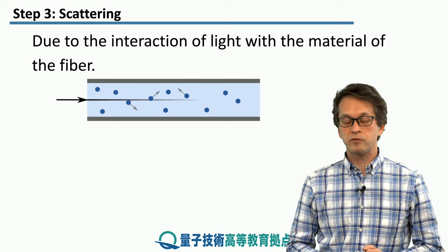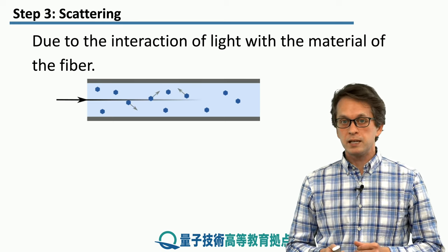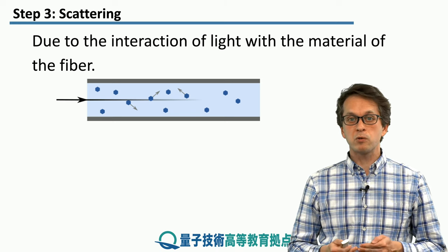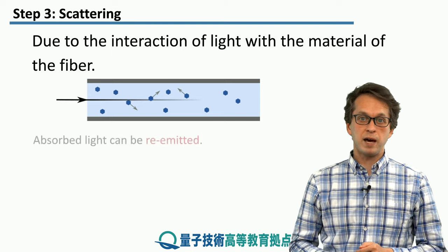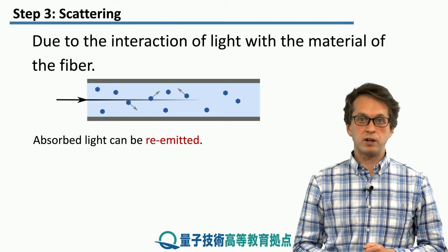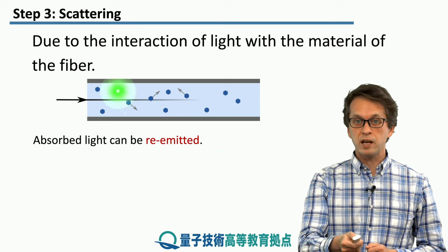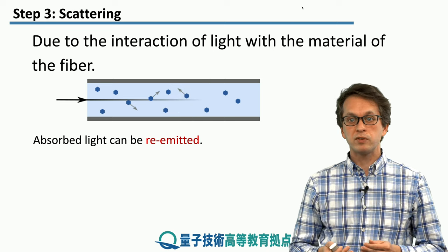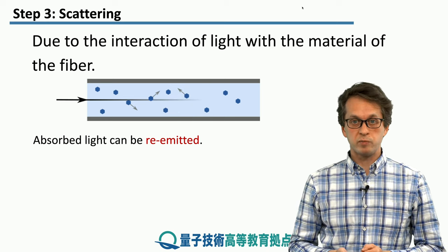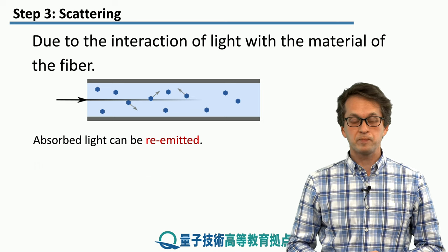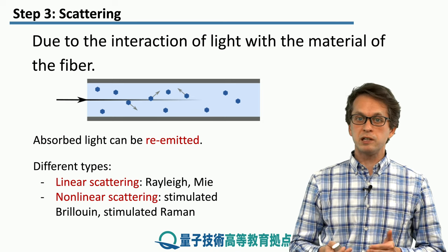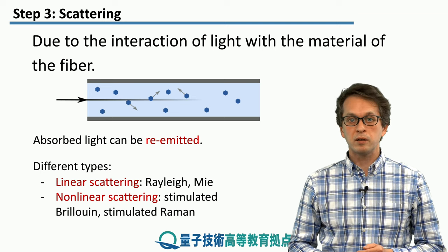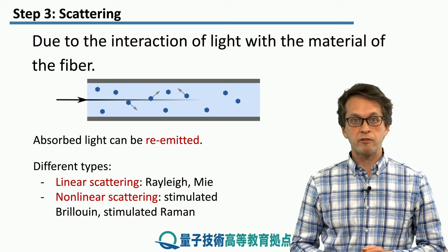The other source of attenuation is scattering. This is similar to absorption, but the light is not only absorbed — it is also re-radiated and re-emitted back into the fiber at random directions. This is again due to impurities in the fiber and can be controlled by the manufacturing process. There are many different types of scattering: there is linear scattering and non-linear scattering, but the details will not be discussed in the current lesson.